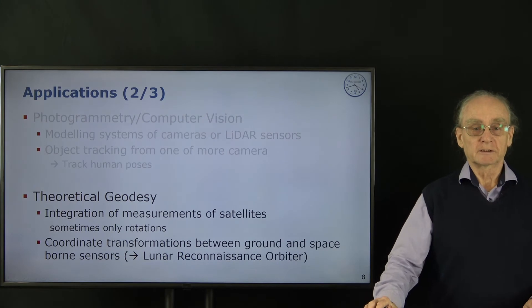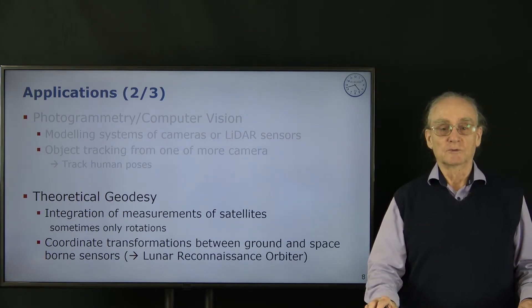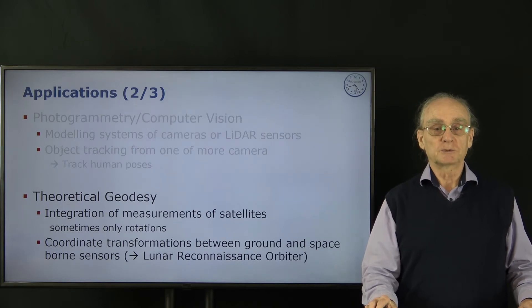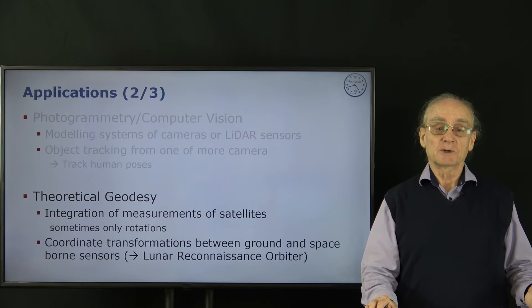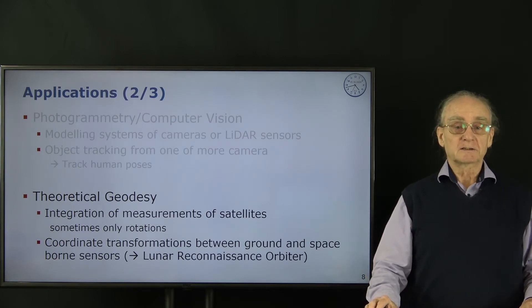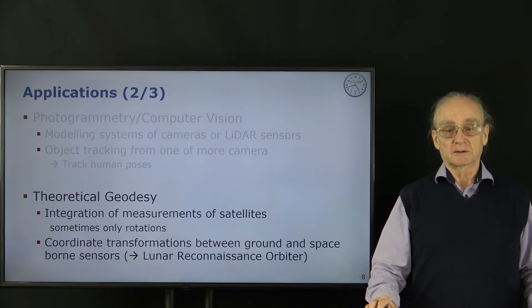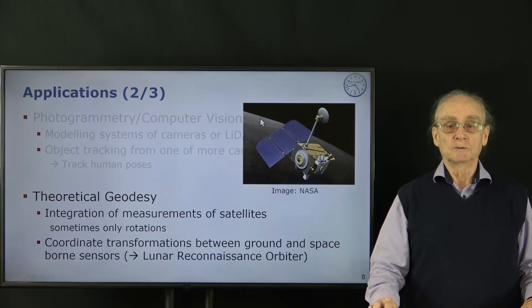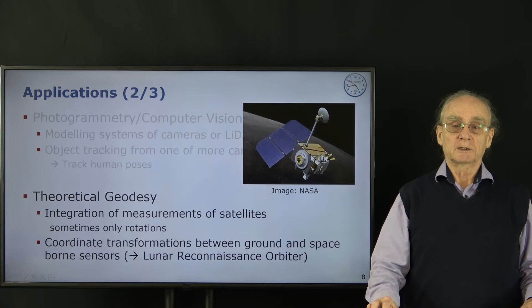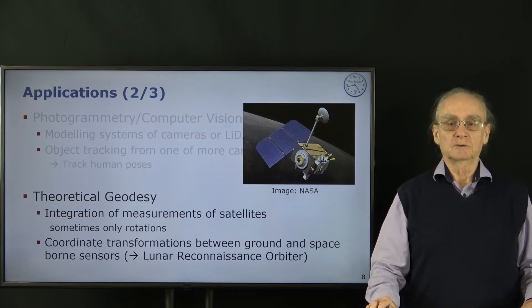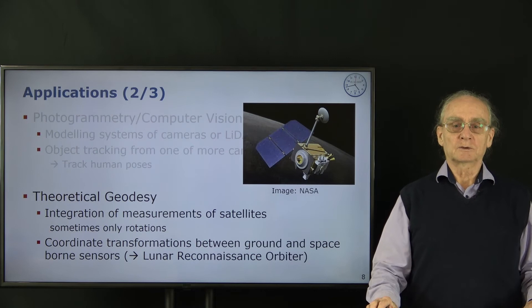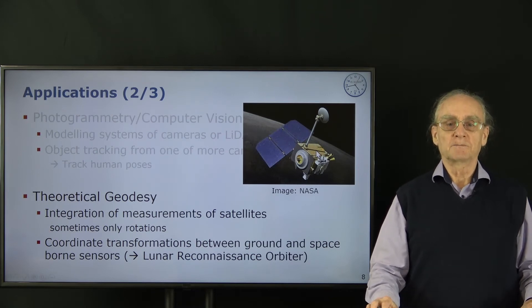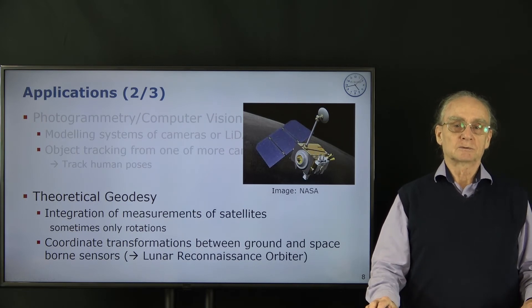We also have applications in theoretical geodesy. There we have satellites which move around the earth, and we want to know the relative position between these satellites and the earth. Sometimes we only have rotations, but we also need the coordinate transformation between the ground of the earth and space. I give you an example here from the lunar reconnaissance orbiter. You see here the satellite and in the background the moon. In order to observe what's happening on the earth or here to observe the moon and find out the landscape, we need to know the position of this orbiter with respect to the ground of the moon.